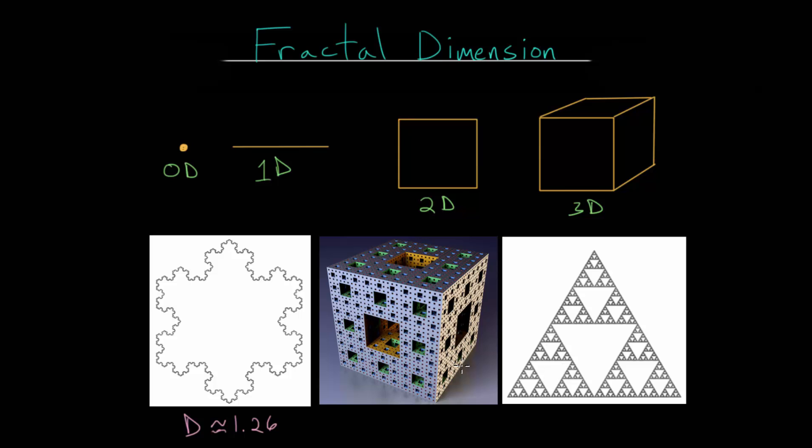This object right here, this fractal, we call this the Menger sponge. And this one right here is called the Sierpinski triangle. Now these two fractals we'll look at in greater detail in later videos. But for now, the dimension of the Menger sponge is approximately 2.73. And for this Sierpinski triangle, the dimension of this object is approximately 1.585.